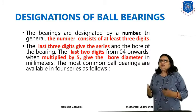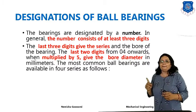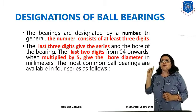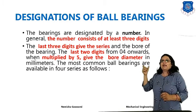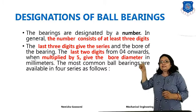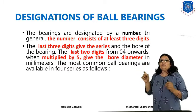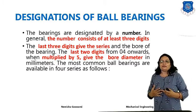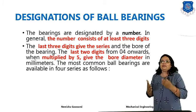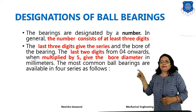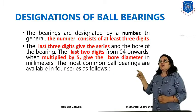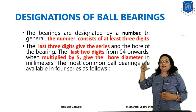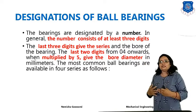So what is meant by the designation of a ball bearing? Bearings are basically designated by a number. In general, the number consists of at least three digits. The last three digits give the series and bore of the bearing. The last two digits from 04 onwards, when multiplied by 5, give you the bore diameter — that is, the inner race diameter where the balls are placed.